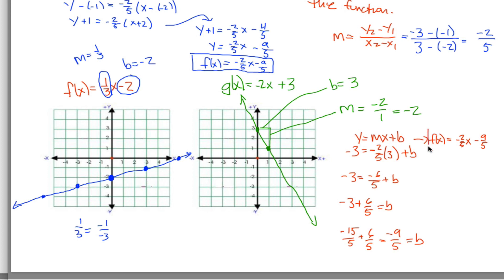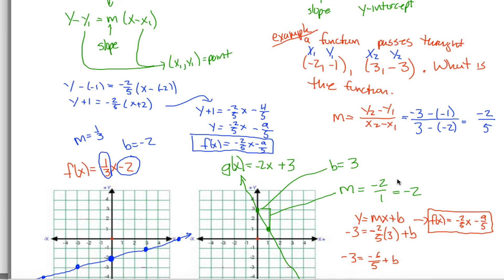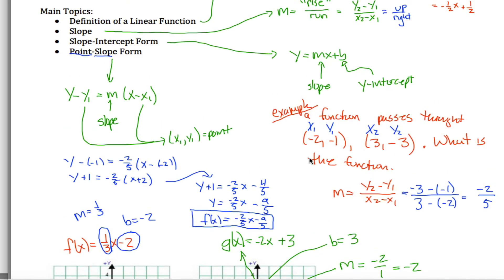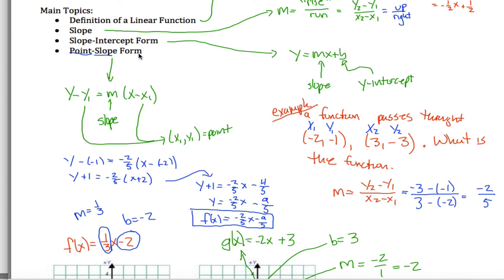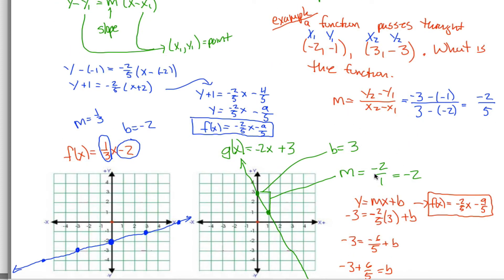Both methods give the same answer. Normally I'd tell you which method is better, but this is a rare case where it's worth knowing both. Understanding both slope-intercept and point-slope form — and how they relate — will help you find the equation of a function in different situations.